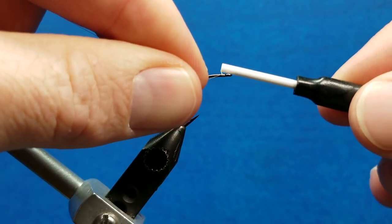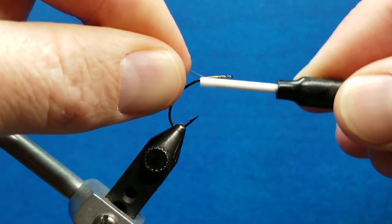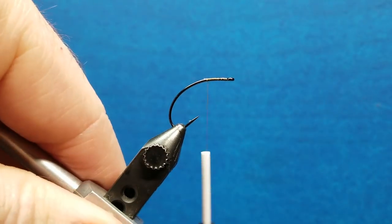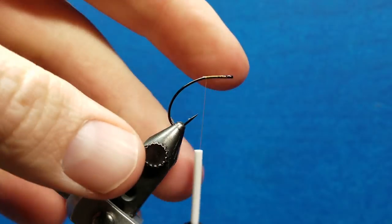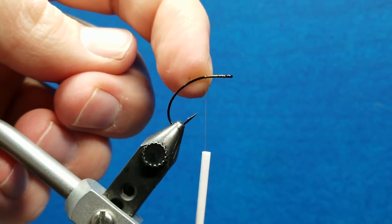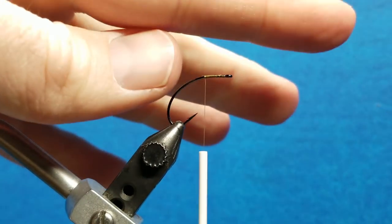I'm going to come in and attach my thread here behind the eye of the hook, take a few wraps and snip off the excess. When you set this up to tie this pattern, you want to try to ensure that this top flatter part of the clink hammer hook is approximately level with the ground.